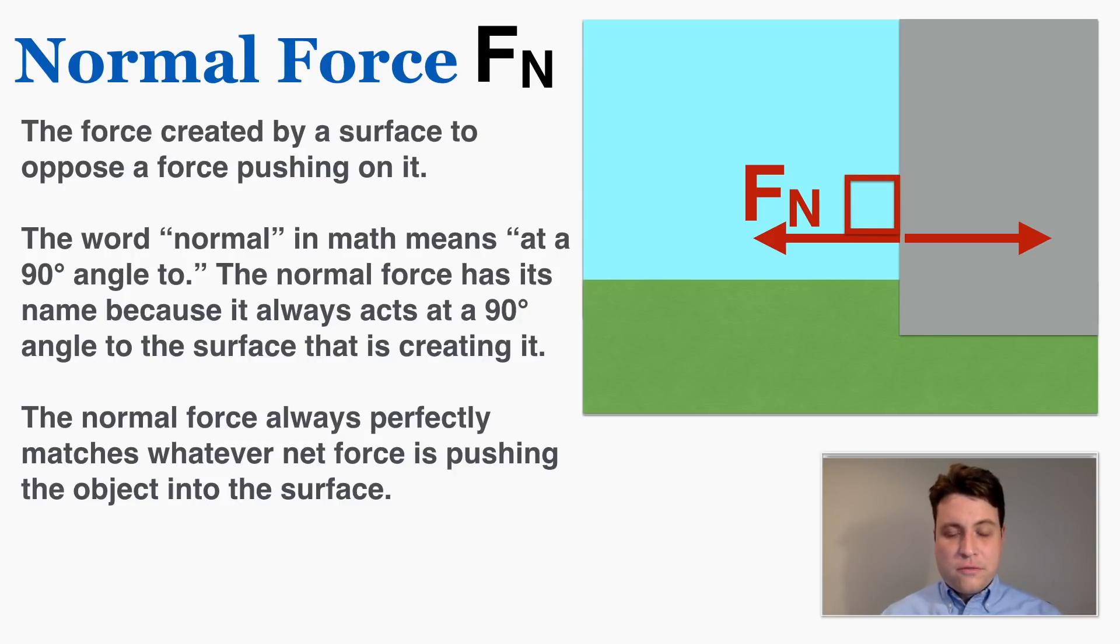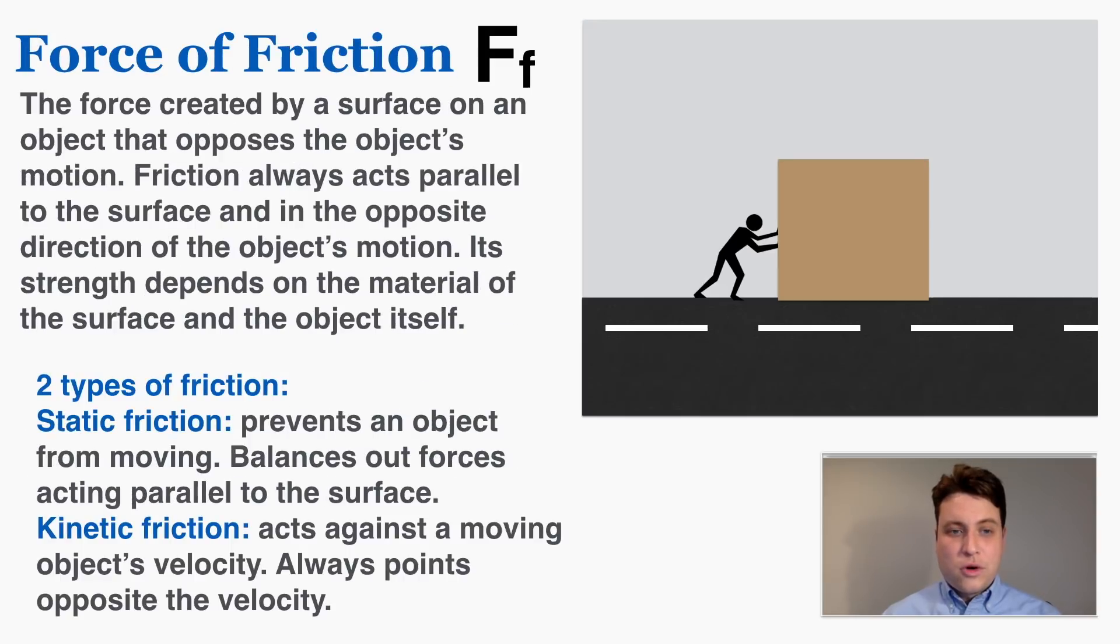The next type of force we're going to talk about is the force of friction that's symbolized as F lowercase f. That's the force created by a surface on an object that opposes the object's motion. Friction always acts parallel to the surface and in the opposite direction of the object's motion. Its strength depends on the material of the surface and the object itself. There are two types of friction that we're going to go much more deep into in a future video. Static friction which prevents an object from moving and balances out forces acting parallel to the surface, and kinetic friction which acts against the moving object's velocity and always points opposite to the velocity.